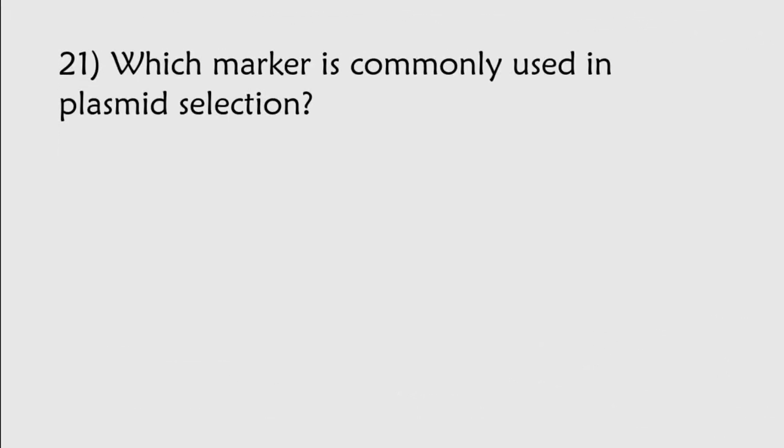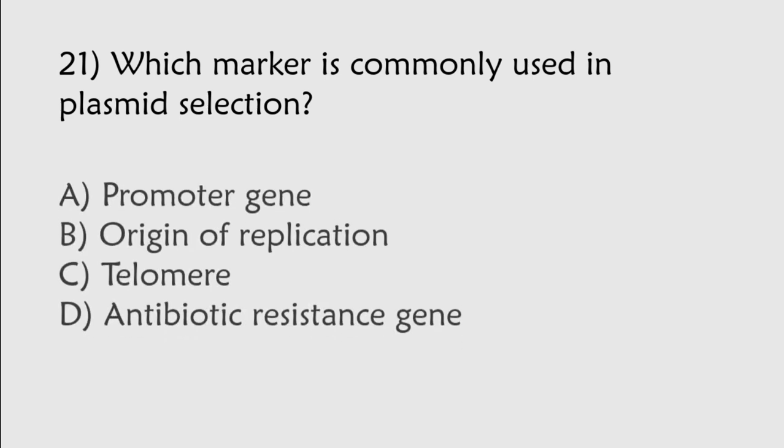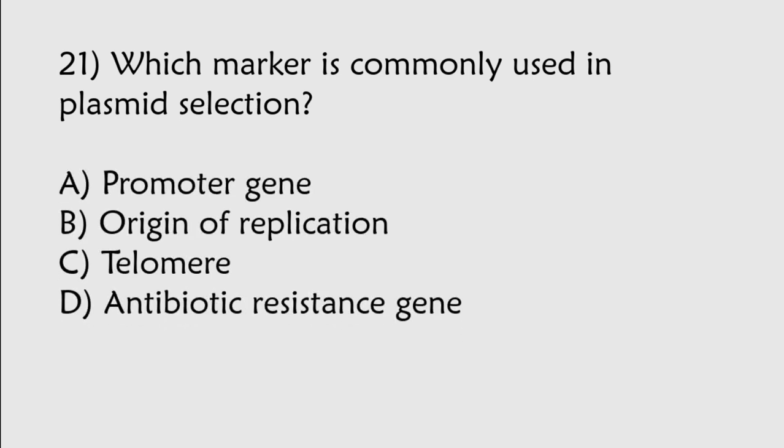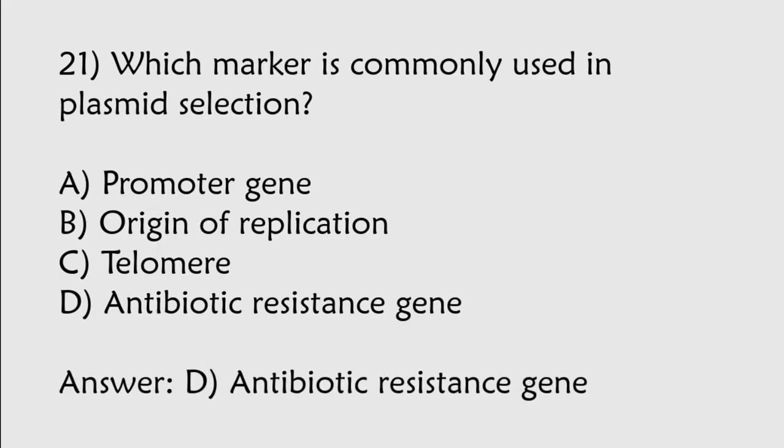Which marker is commonly used in plasmid selection? Promoter gene, origin of replication, telomere, antibiotic resistance gene. Correct answer is Option D, antibiotic resistance gene.